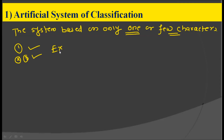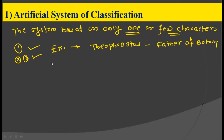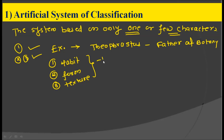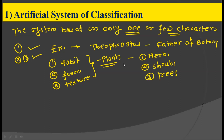A very famous example of the artificial system of classification is Theophrastus, who is the father of botany. He classified plants on the basis of three characters: habit, form, and texture. Depending upon these three characters, he gave out the classification as herbs, shrubs, and trees.